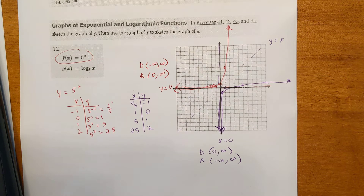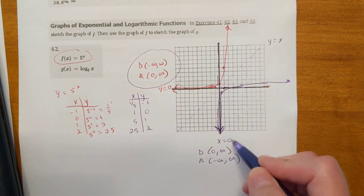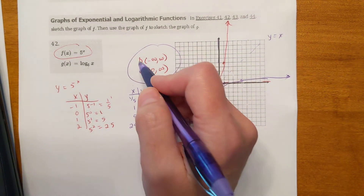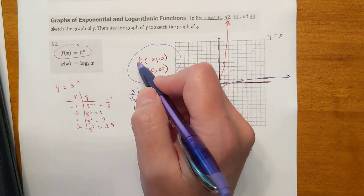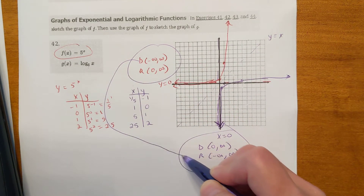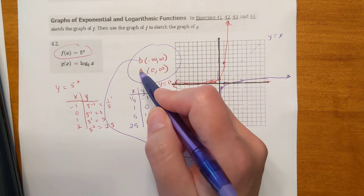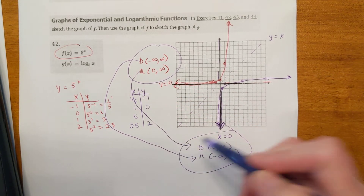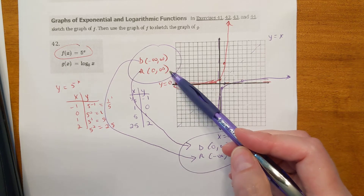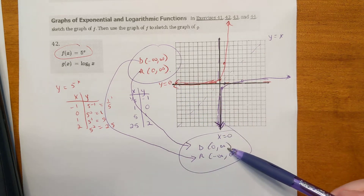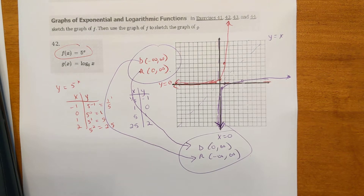Notice the domain and range flip — because the x and y's flipped. The domain was infinite for the exponential; now the range becomes infinite on the log. And the range was 0 to infinity for the exponential, so that becomes the domain for the log: 0 to infinity. They flipped. Kind of fun.